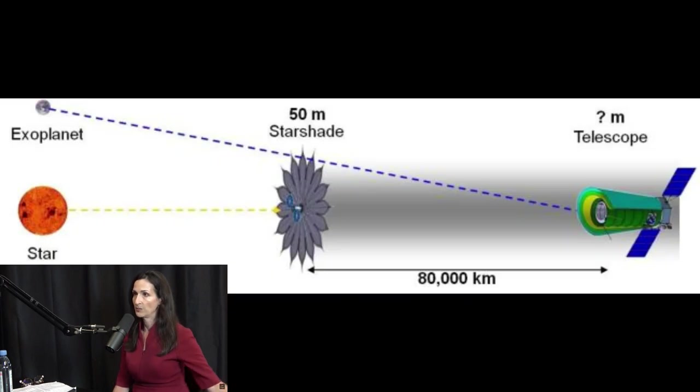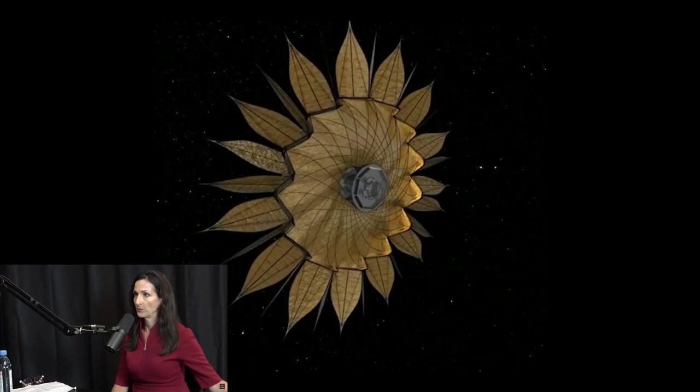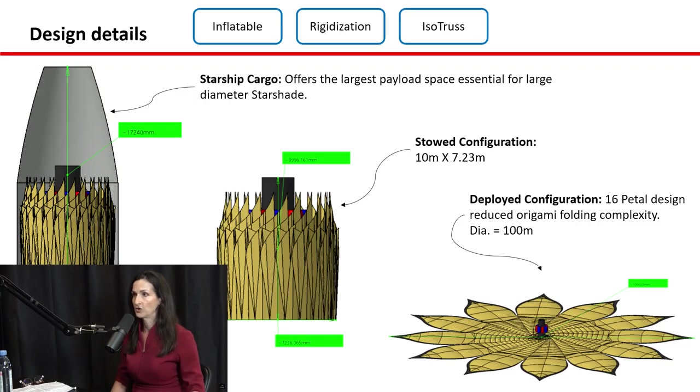And the idea is that when the starshade, this very special shape like a giant flower with petals, when it blocks out the light, the light bends around the edges but interacts with itself in a way to give you a very, very dark image.